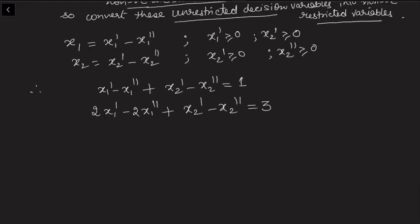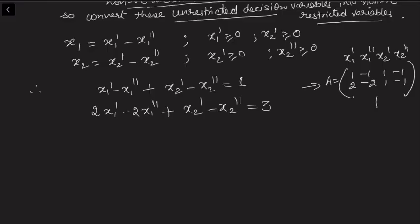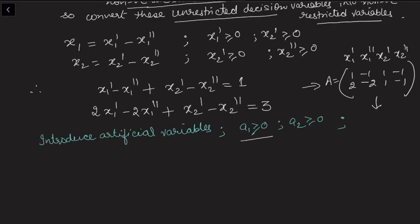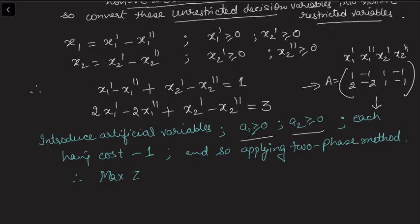Looking at the coefficient matrix, none of the columns gives a ready identity column needed for initial basic variables. The coefficients of x1', x1'', x2', x2'' are: 1, -1, 1, -1 in row one and 2, -2, 1, -1 in row two. Since the identity is missing, we need to add artificial variables a1 ≥ 0 and a2 ≥ 0. We can apply either big-M or two-phase method — suppose we apply the two-phase method, attaching cost -1 to each artificial variable.